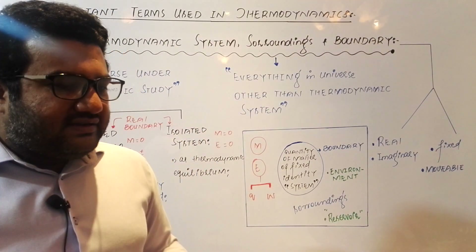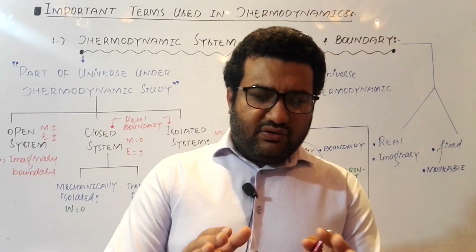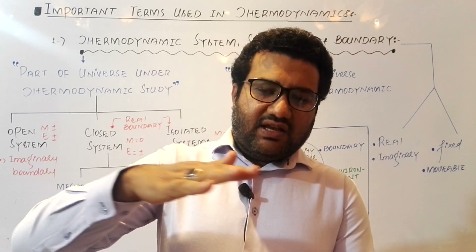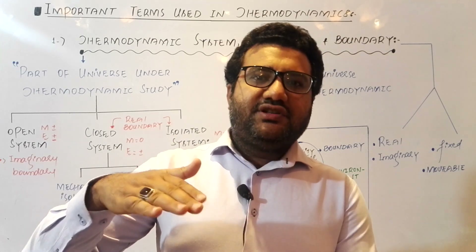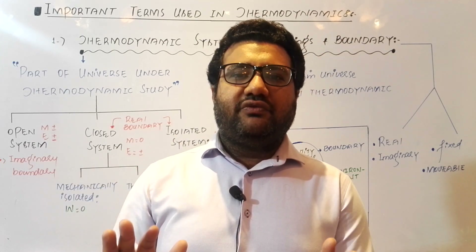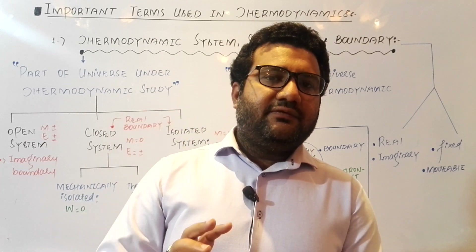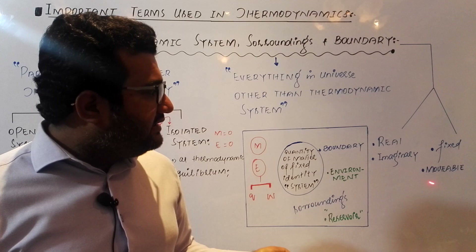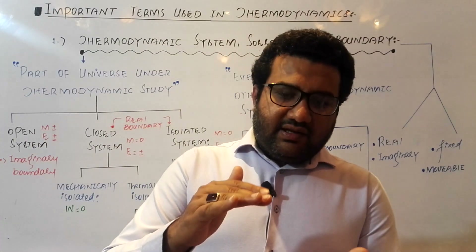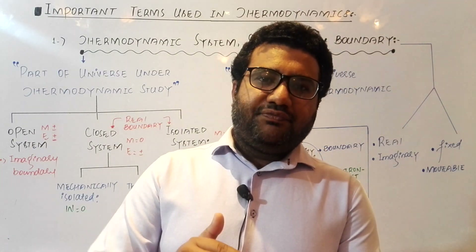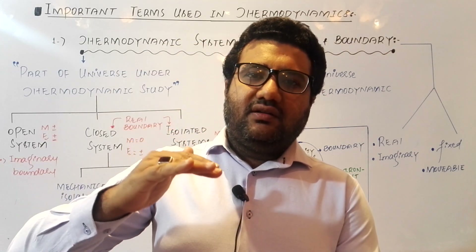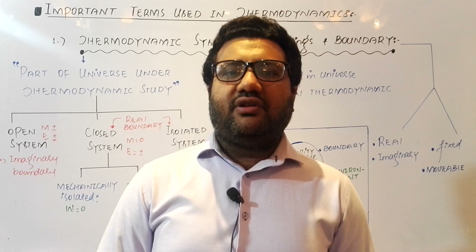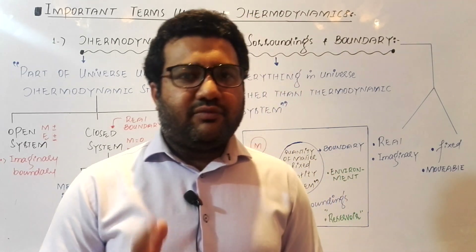The boundary is sometimes fixed. For example, if you are studying a gas in a cylinder with a locked piston that cannot be moved, that is an example of a fixed boundary. But if the cylinder has a movable piston that you can move up and down to increase or decrease the volume of the gas, then that boundary is an example of a movable boundary.